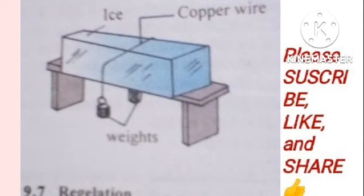This occurs in cycles: the water freezes and refreezes repeatedly, and as such the weights pass through the ice and reach the bottom with the ice still in one piece. This is the process of regelation, resulting from the relationship between pressure and temperature. As you increase the pressure you raise the temperature and melt the ice; when you decrease the pressure you lower the temperature and the ice has enough time to freeze again.